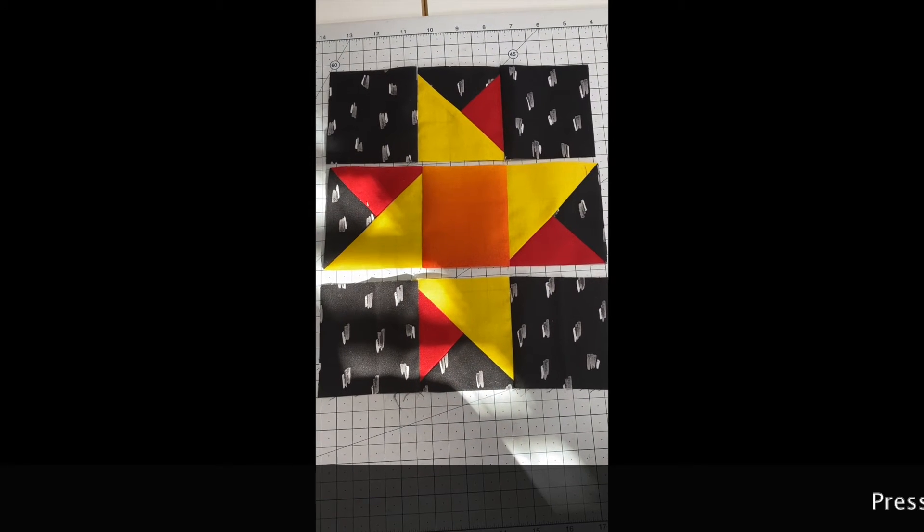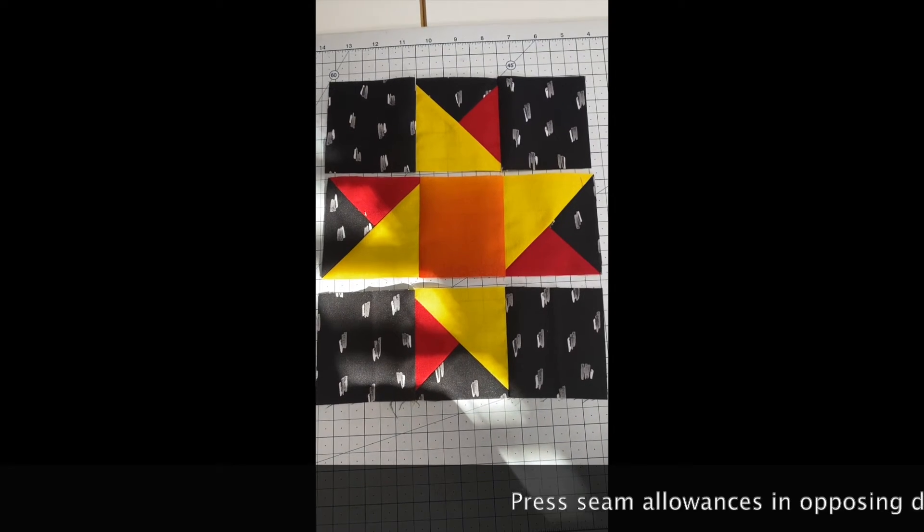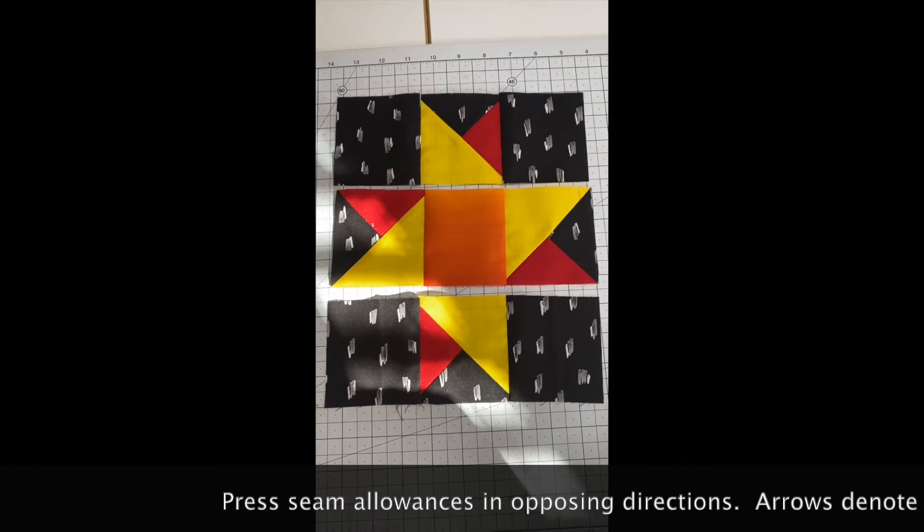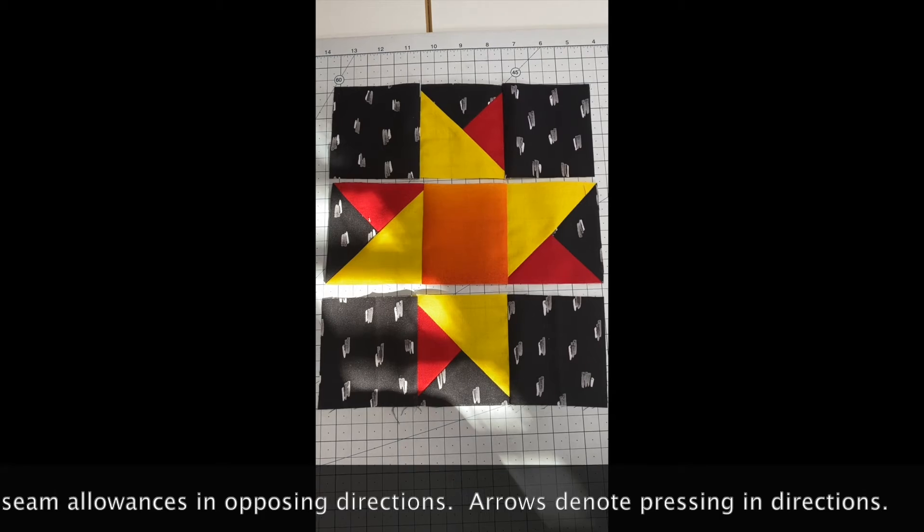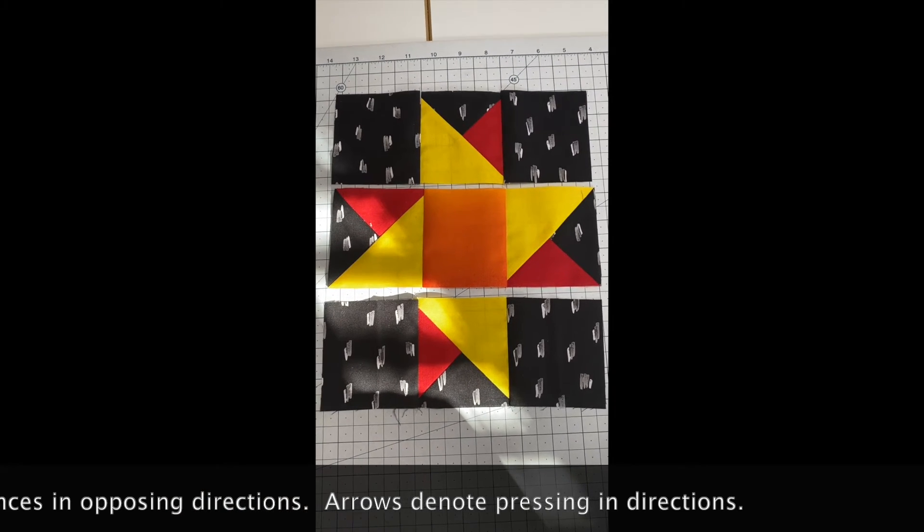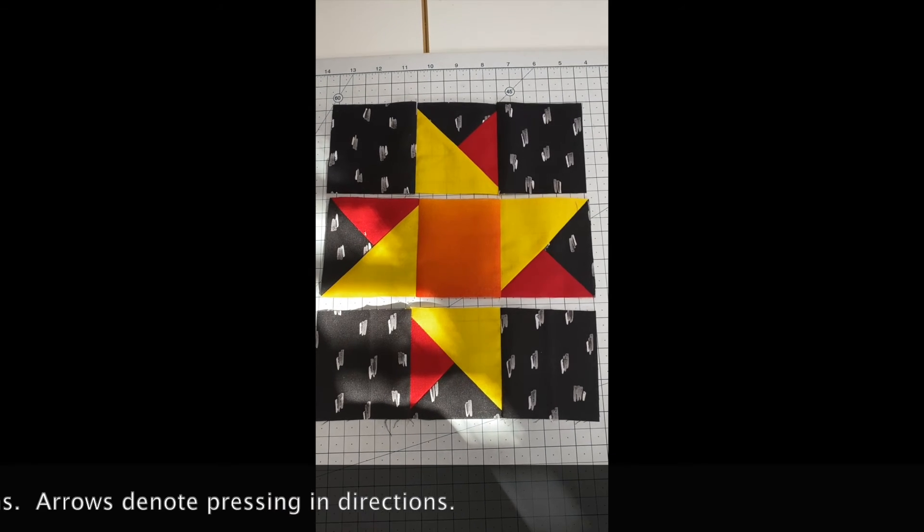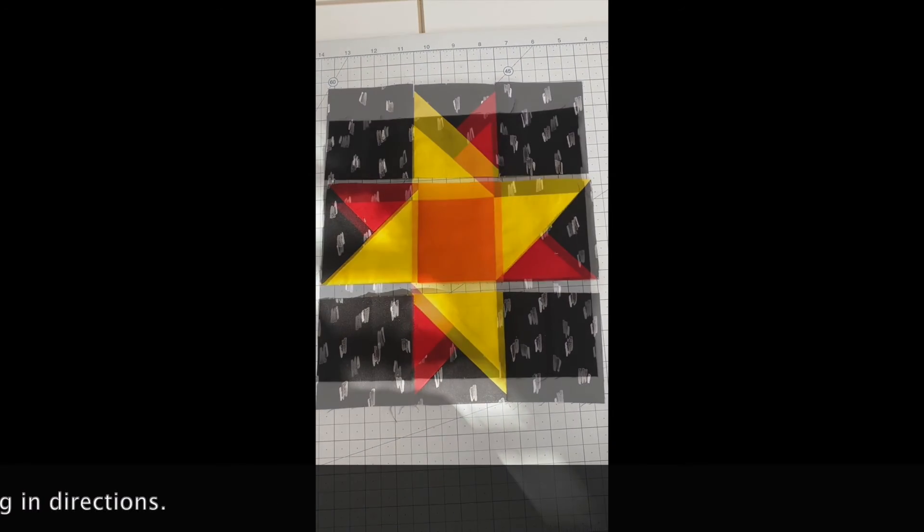Okay, I have my rows or my blocks sewn into rows. And I've just finger pressed them. So they're ready to sew the rows together. And then we'll be all finished. Sometimes I press them with an iron. But for this, I thought it would be better just to finger press. And the pattern directions has the arrows to show you which way to press.